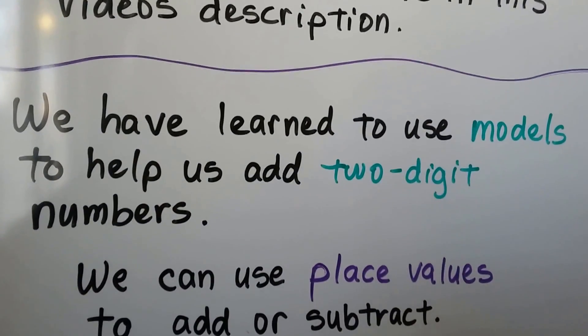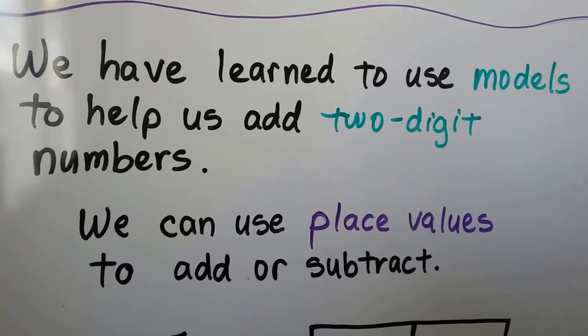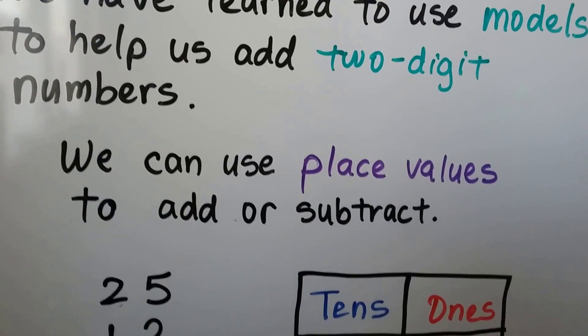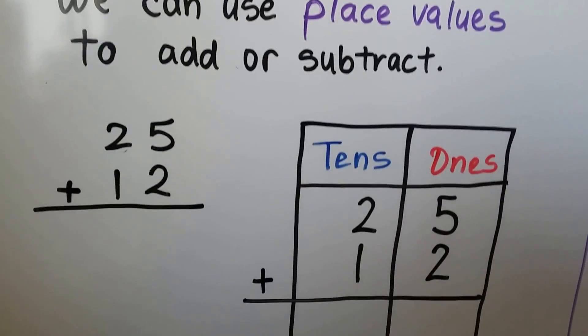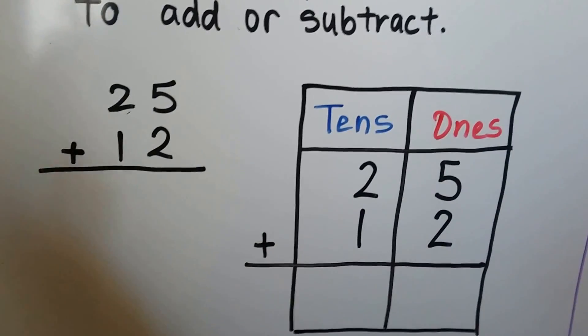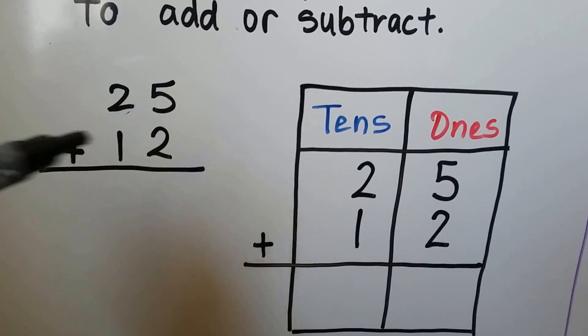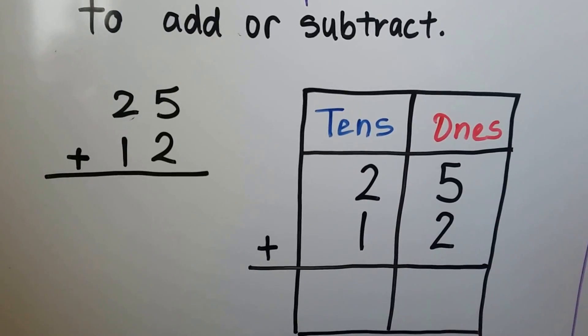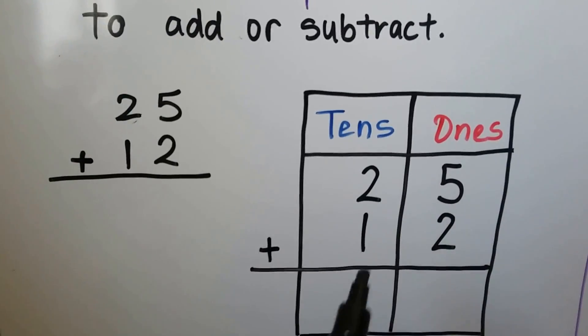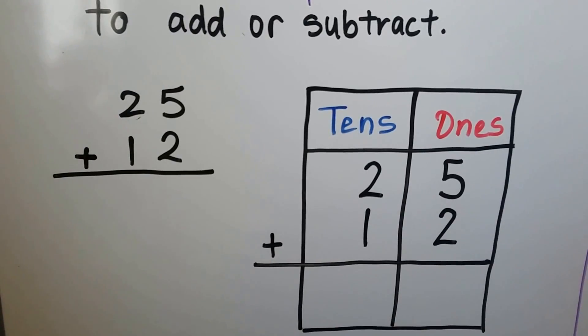We have learned to use models to help us add two-digit numbers. We can use place values to add or subtract. Here we have an addition problem. We see the plus sign so we know it's addition. 25 plus 12. We can use the place values, the ones place, and the tens place to help us add these two-digit numbers.